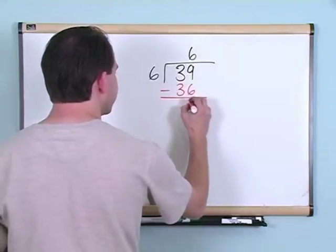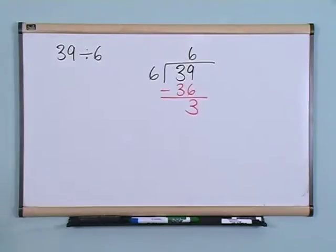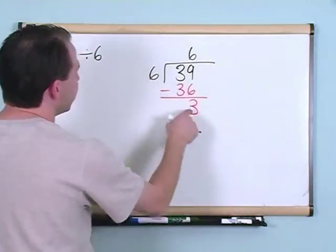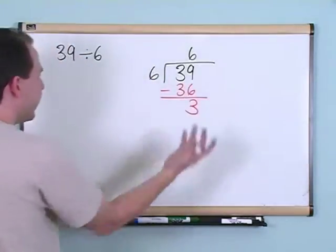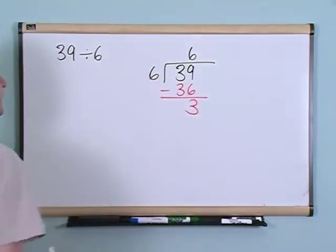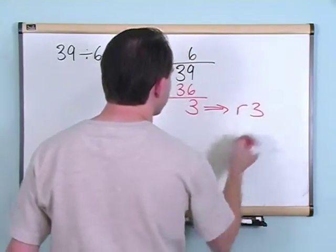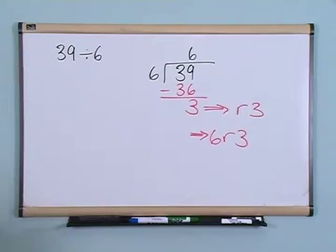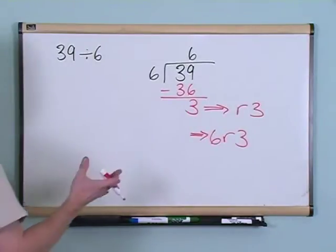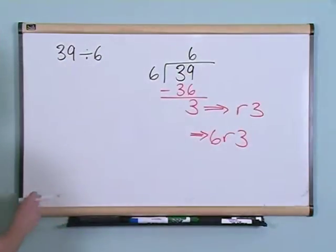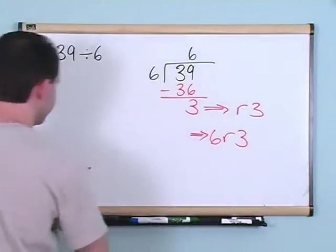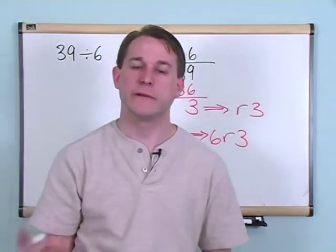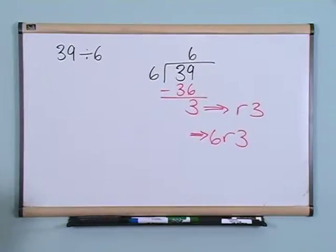Nine minus six gives you three, and three minus three gives you zero. The remainder is three. You can't divide six into three because the number is too small — you can't make a group of six things when you only have three. So you can't do any more division. The answer is six with a remainder of three. Graphically, if you drew 39 circles and divided into groups of six, you'd have six complete groupings with three balls left over.